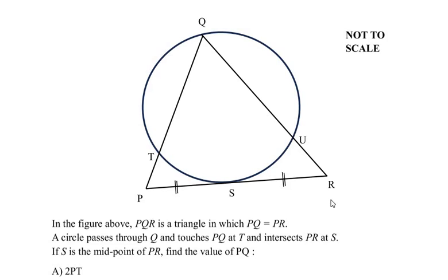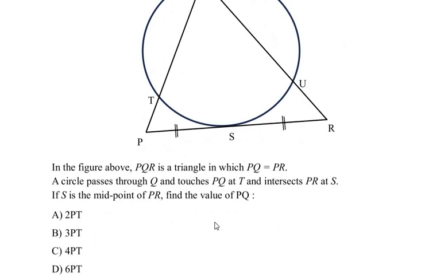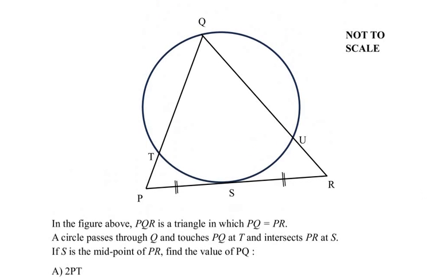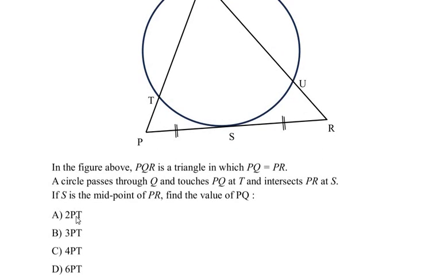Hello and welcome to my channel. In this video we are going to solve an example from circles. This is a different kind of question because it involves multiple choice — there are four options and we have to choose one. In the figure above, PQR is a triangle in which side PQ equals side PR. A circle passes through point Q, touches PQ at point T, and intersects PR at point S. If S is the midpoint of side PR, find the value of PQ in terms of PT.